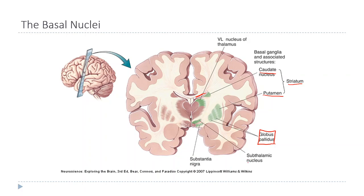Two other regions are also part of the basal nuclei. The subthalamic nucleus is located underneath the thalamus — it might seem confusing because the hypothalamus is also below the thalamus, but the subthalamic nucleus is a separate structure, posterior to the hypothalamus. While the thalamus and hypothalamus are part of the diencephalon, the subthalamic nucleus sits on the border between the midbrain and the diencephalon.